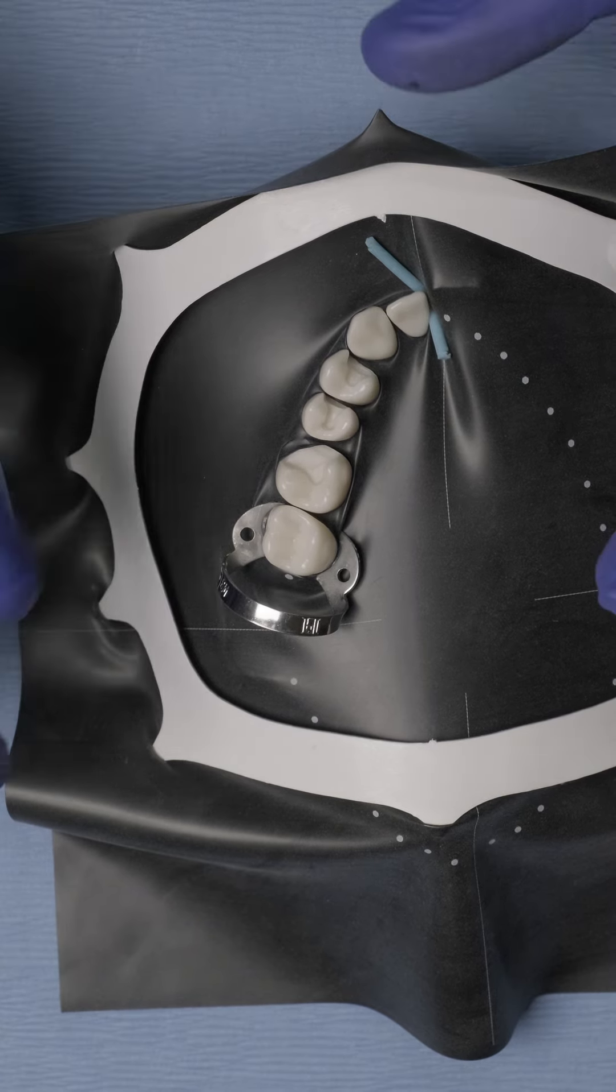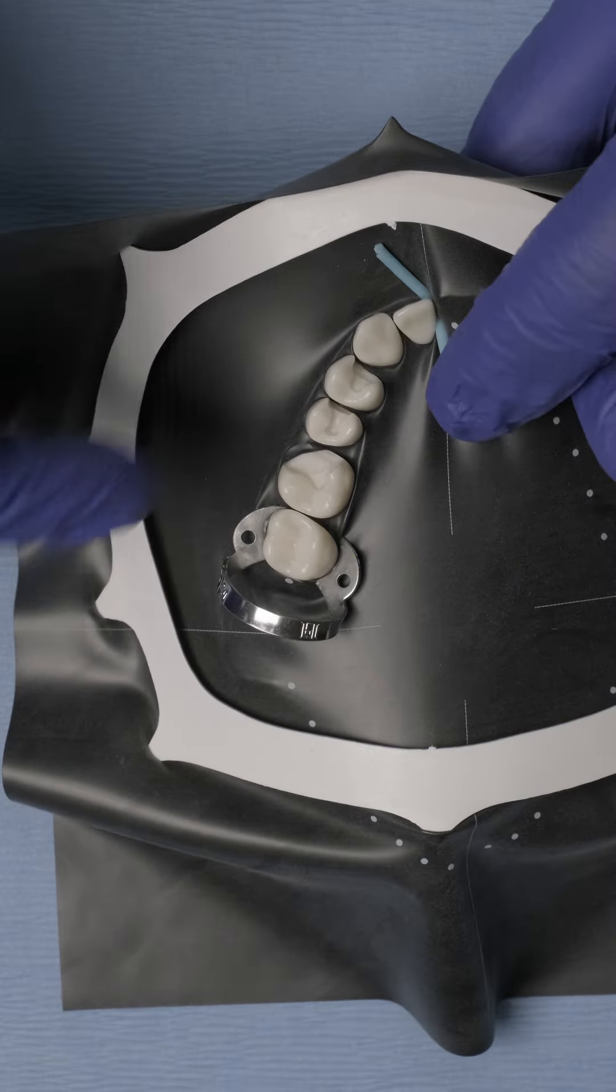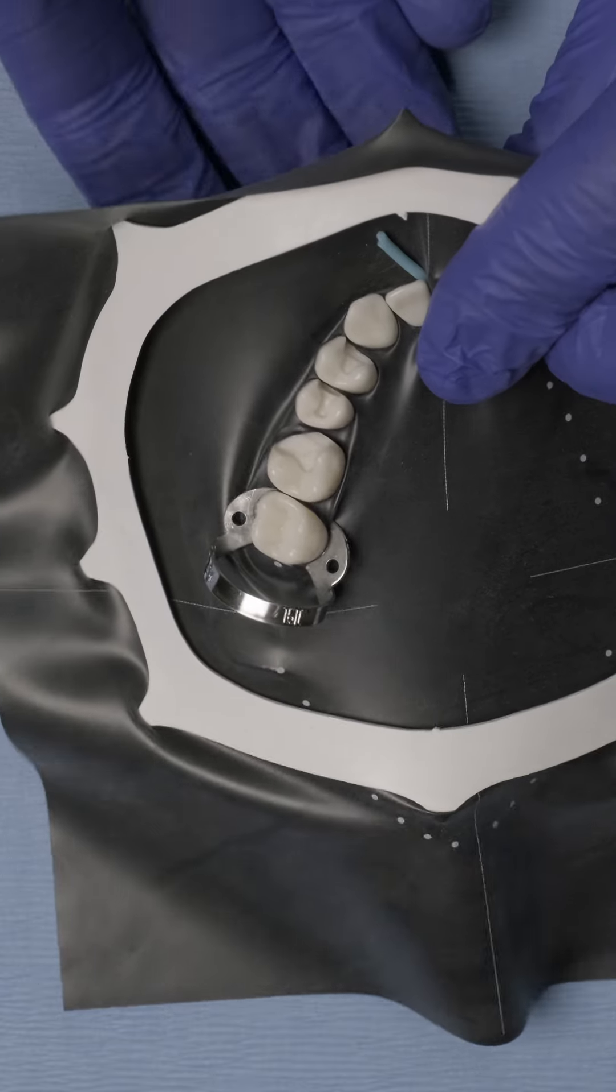A common problem that we're all confronted with when we're trying to isolate multiple teeth for operative dentistry is that a rubber dam sometimes does not invert itself correctly.